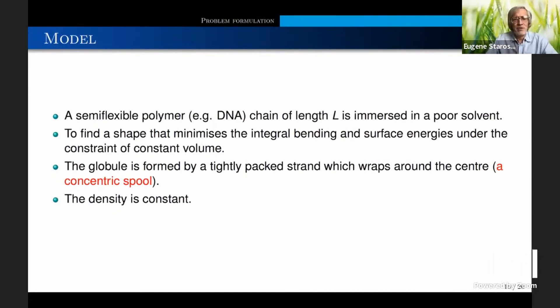Now I am going to describe the model in more detail. We consider semi-flexible polymer DNA of length L, which is immersed in poor solvent. And I want to find the shape of the globule that is made of this polymer of some fixed thickness. And this shape must minimize the bending energy and the surface energy. And we have a constraint of constant volume and fixed scale.